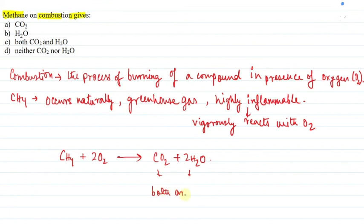Clearly in combustion, both CO2 and H2O are produced. So both are produced. Clearly, the correct option is option C, both CO2 and H2O. This is our correct option, option C, both CO2 and H2O.